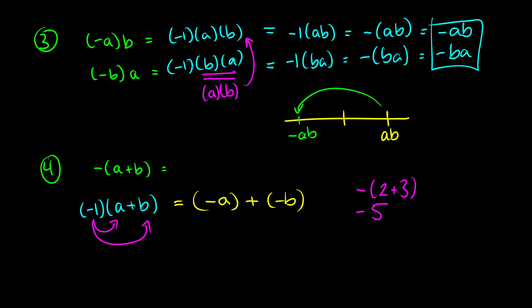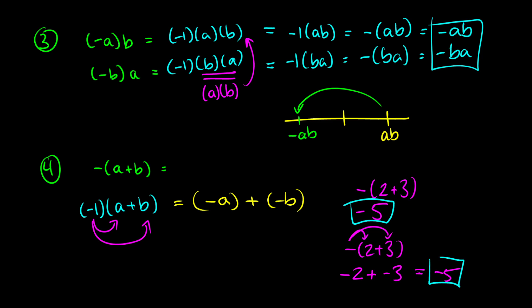We can also distribute the negation into each term: negative 2 plus negative 3, which also gives us negative 5. Regardless of which way we do this, we get the same result. Of course, when you have variables inside your bracket, you have to use the distributive method. This is just the distributivity rule with a negative number, specifically negative 1.